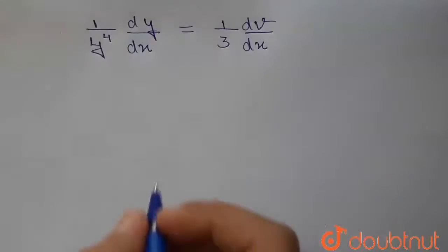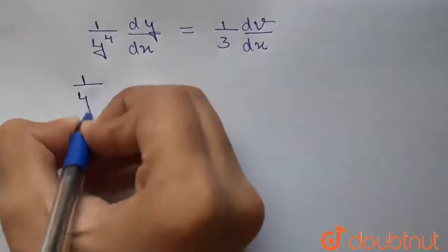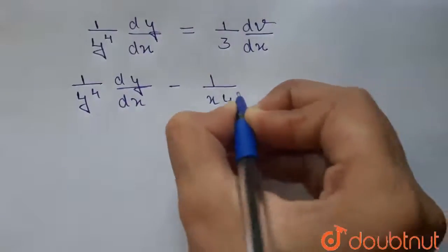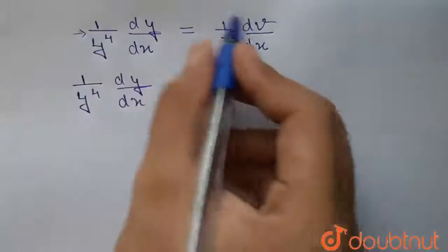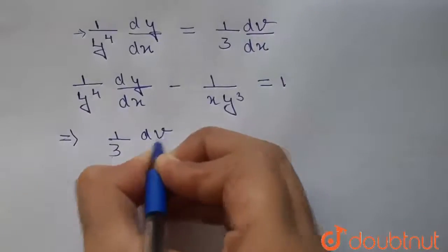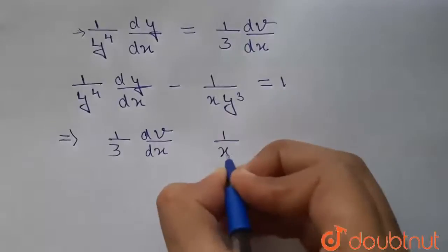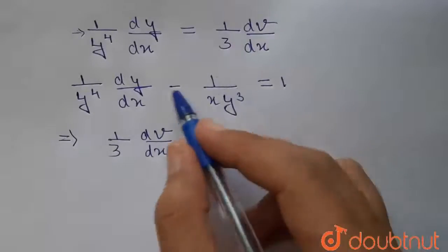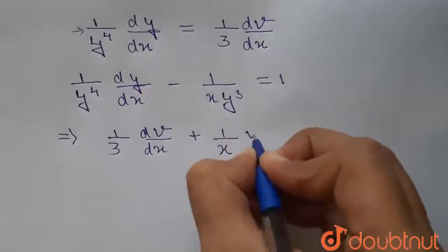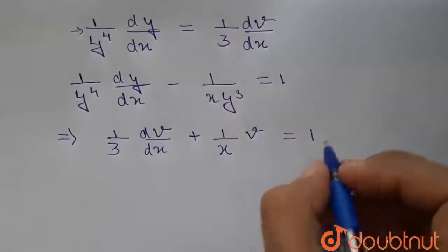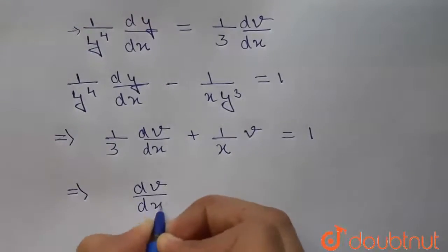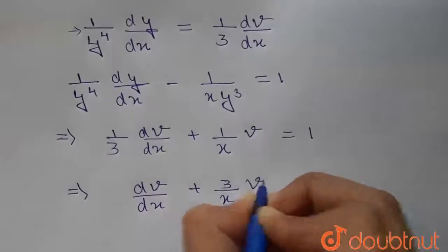The equation was 1 upon y to the power 4 dy by dx minus 1 upon x y cubed equals 1. Substituting, this becomes 1 by 3 dv by dx, and in place of minus 1 upon y cubed we get plus v, so 1 by 3 dv by dx plus v by x equals 1. Multiplying through by 3 gives dv by dx plus 3 by x into v equals 3.